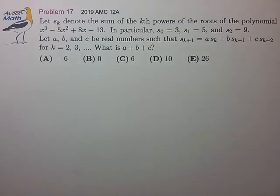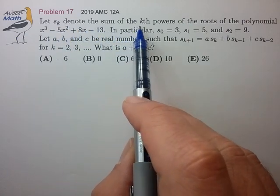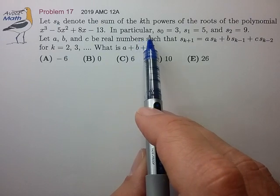Hi, this is problem 17 from the 2019 AMC 12A. Let s_k denote the sum of the k-th powers of the roots of the polynomial shown. In particular,